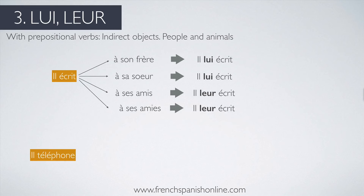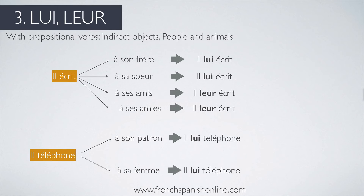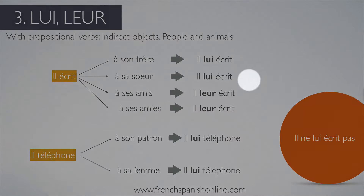It works with people and animals. Il téléphone — téléphoner is also a prepositional verb in French, téléphoner à. Il téléphone à son patron (his boss) → il lui téléphone. À sa femme (his wife) → il lui téléphone. The negative form: il ne lui écrit pas. As you can see, the pronoun sticks to the verb — NE before and PAS afterwards: il ne lui écrit pas.